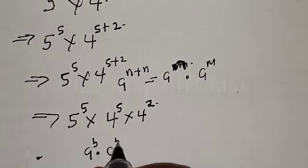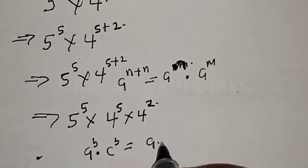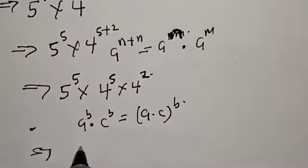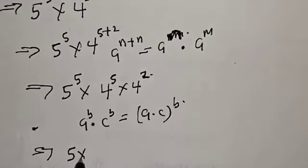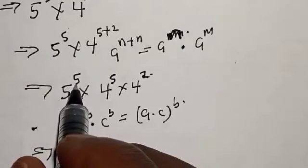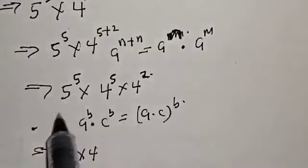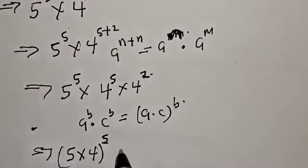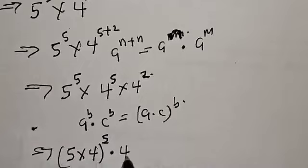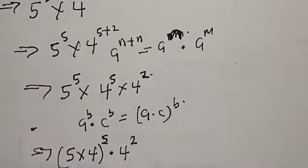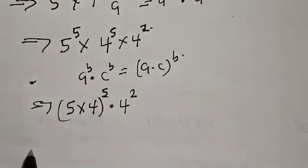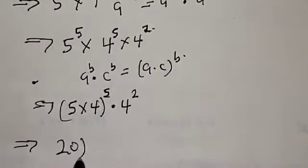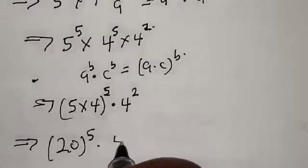Using the rule that a raised to power b multiplied by c raised to power b equals a times c raised to power b, since both terms share the same exponent of 5, our a is 5 and our c is 4. So we have 5 times 4 raised to power 5, then multiplied by 4 squared. That gives us 20 raised to power 5 multiplied by 4 squared.